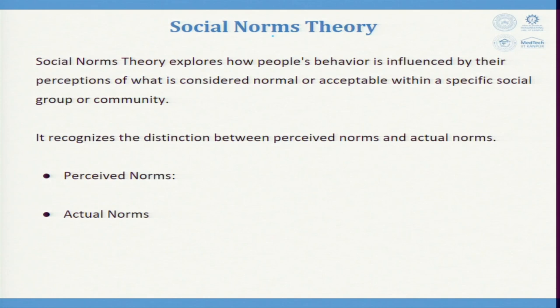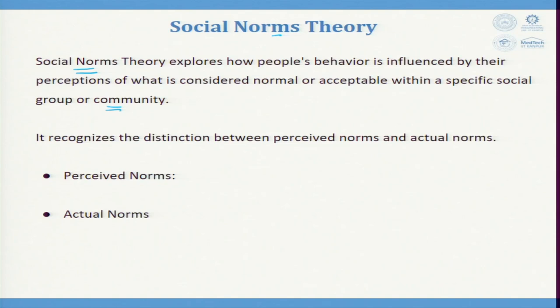Social Norm Theory explores how people's behavior is influenced by their perception of what is considered normal or acceptable within a specific social group or community. Many times we say 'this is the norm we follow in this society.' Social norm theory explores how people's behavior is influenced by their perceptions of what is considered normal or acceptable.